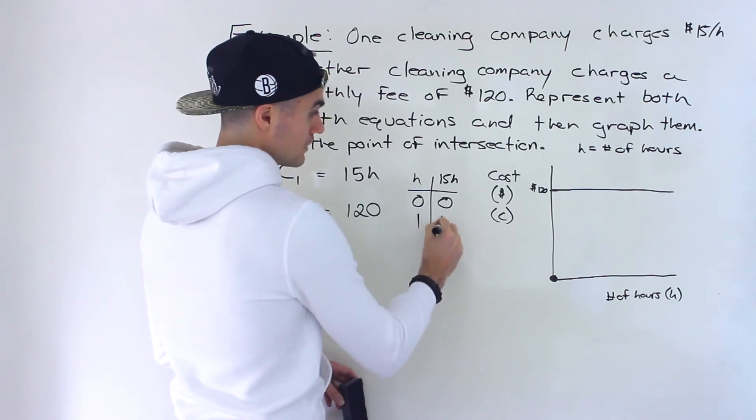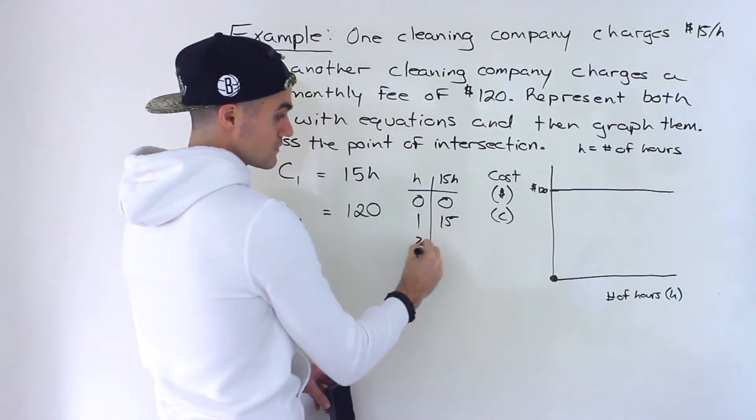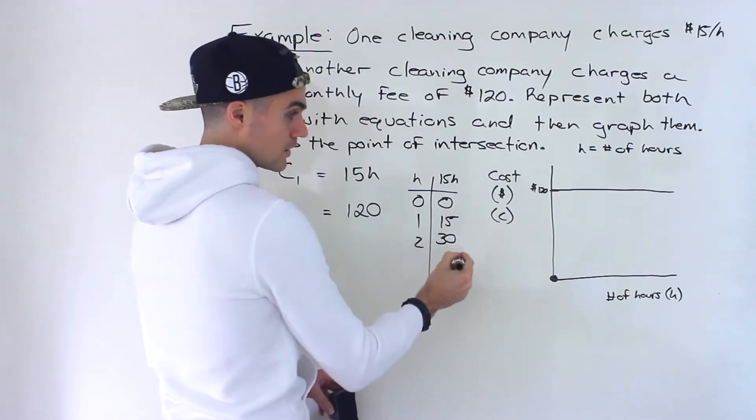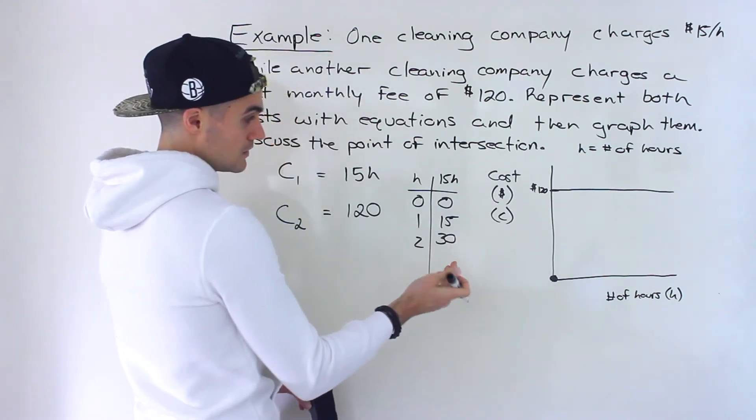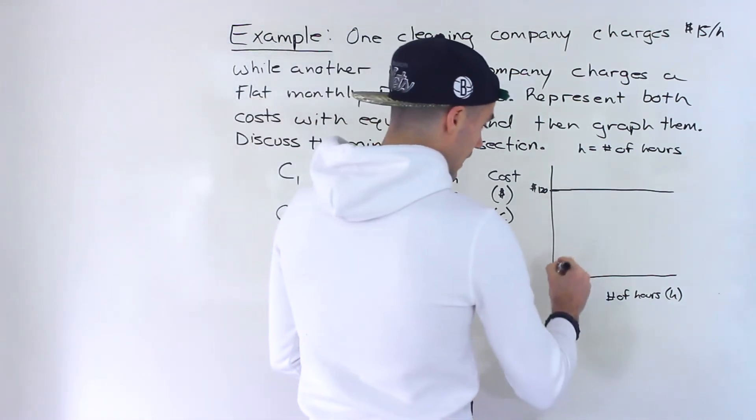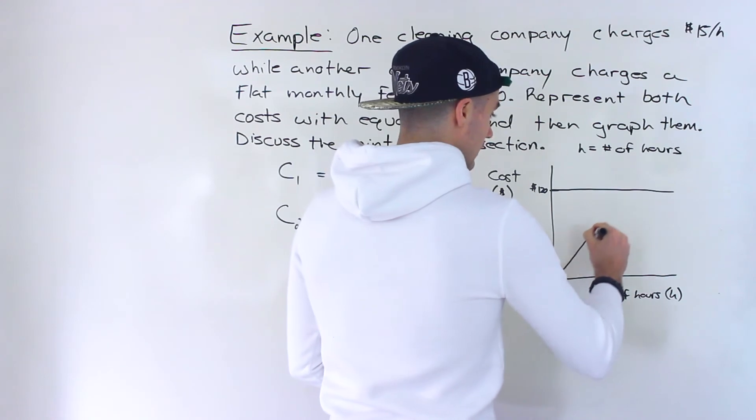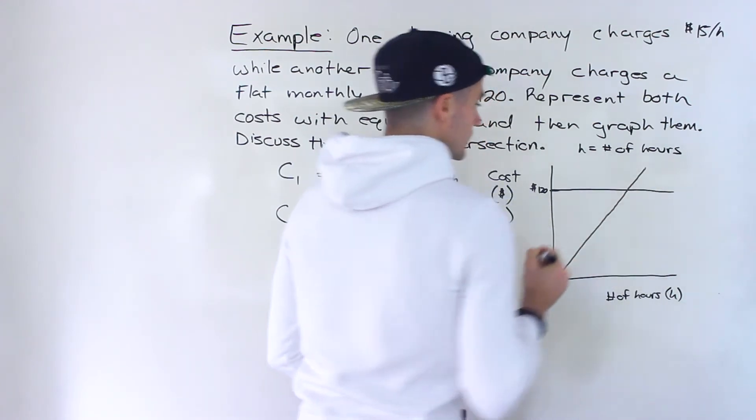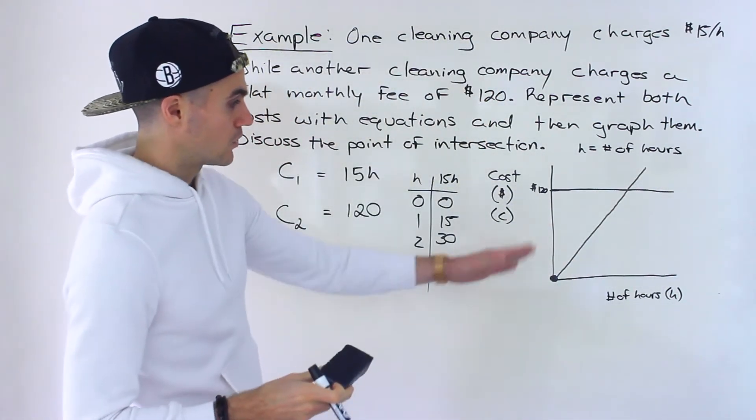But if there's one hour, then it's going to cost $15. If it's two hours, $30, et cetera. So it's just basically a line like this that has an upward slope.